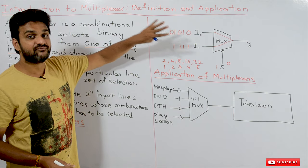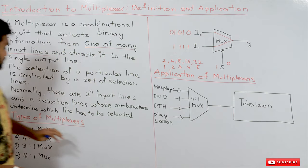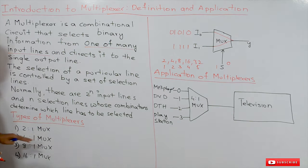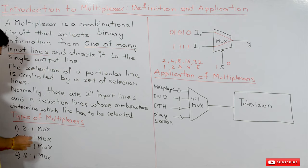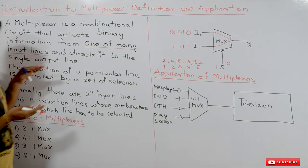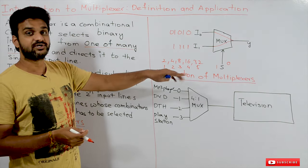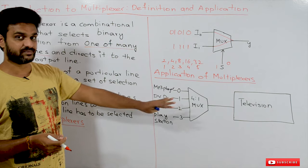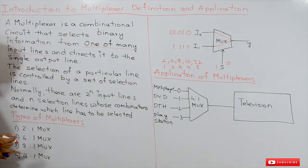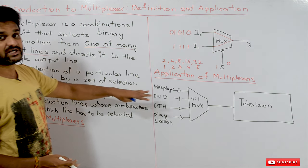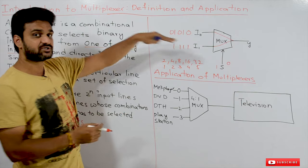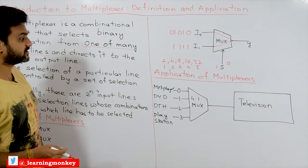There are different types of multiplexers: a 2-to-1 multiplexer, a 4-to-1 multiplexer with four inputs and one output, an 8-to-1 multiplexer with eight inputs and one output, and a 16-to-1 multiplexer with sixteen inputs and one output. The output is always one.